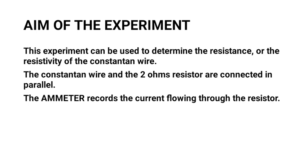The aim of this experiment is to determine the resistance or the resistivity of the constantan wire. For teachers, one of the things that WAEC can demand is the resistivity of the constantan wire and the type used. In previous years, WAEC would specify the type of constantan wire — for example, SWG 36, 32, 30, or 28. Each standard wire gauge has its own diameter and resistivity.